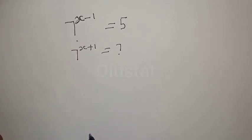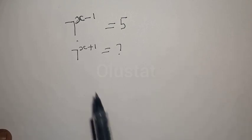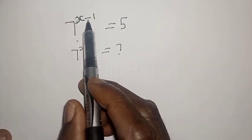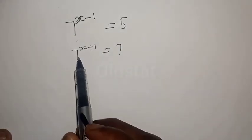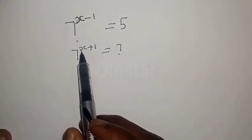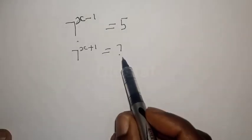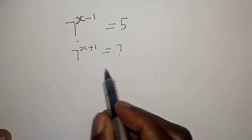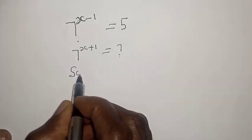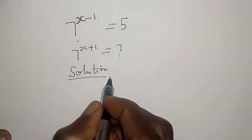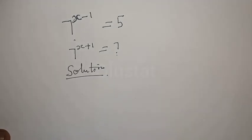Hi everyone, welcome to my class. In today's class we want to look at how to solve this exponential equation: 7 raised to power x minus 1 is equal to 5. Then what is the value of 7 raised to power x plus 1? We don't know the value of 7 raised to power x plus 1, so we have a solution. We're going to use two methods to solve the equation.